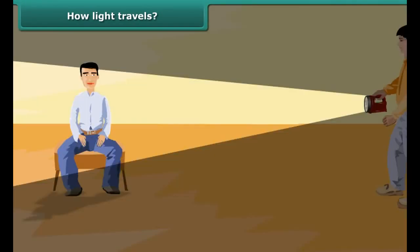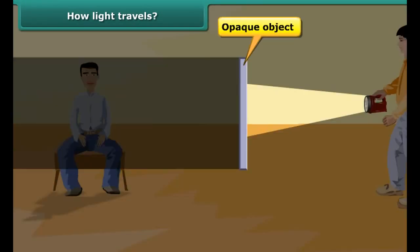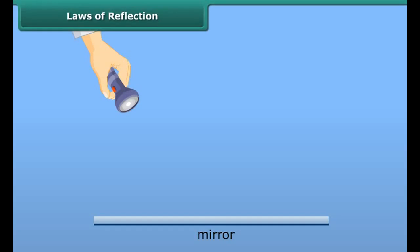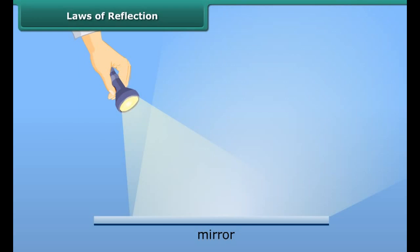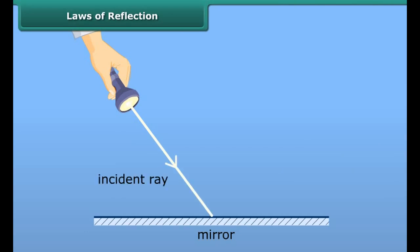If we keep an opaque object in front of the source of light, the path of light is obstructed, thus forming a shadow behind the opaque object. This shows that light travels in a straight line, else we could have seen through the opaque object.